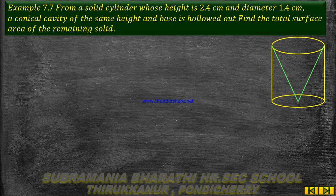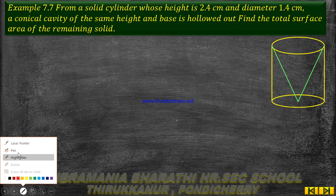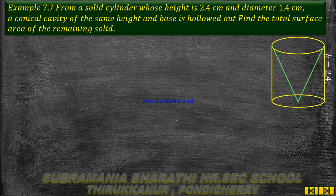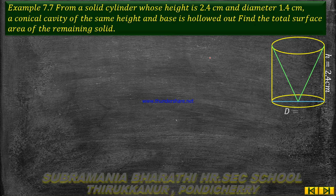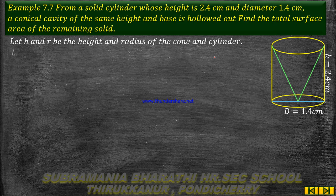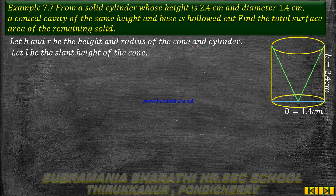The conical cavity has the same height as the cylinder. Total height h is equal to 2.4 cm, diameter is equal to 1.4 cm, and radius is equal to half of the diameter, which is 0.7 cm. Here h and r are the height and radius of both the cone and the cylinder.